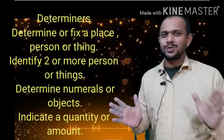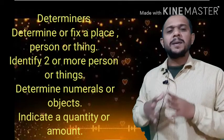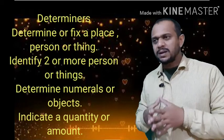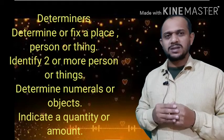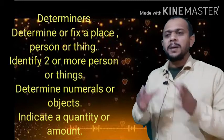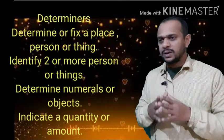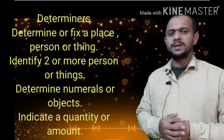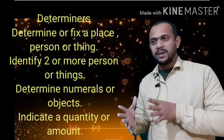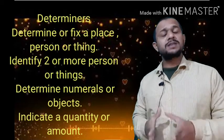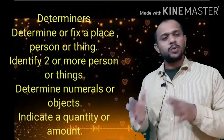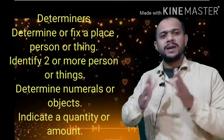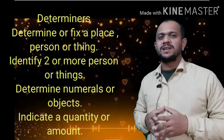Characteristic one: a determiner may determine a person, place, or thing. Characteristic two: a determiner may identify two or more persons. Characteristic three: a determiner may determine numerals or objects. Characteristic four: a determiner may determine the quantity or amount of something.